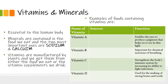The first vitamin we will look at is vitamin A. We can find vitamin A in egg yolks and in dark green vegetables, for example broccoli. The function of vitamin A is that it enables the eyes to produce a pigment that helps us to see in dim light.